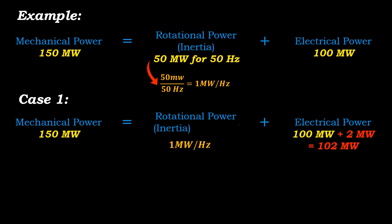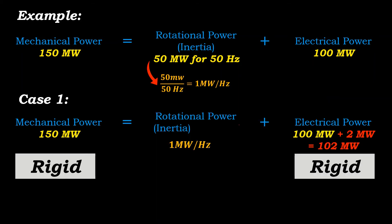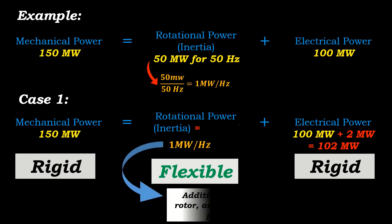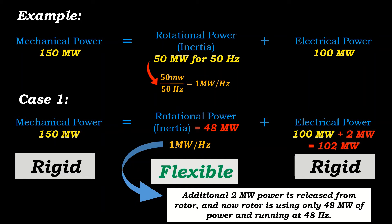It is clear that the load and generation both are rigid. Load is asking for 102 megawatts and input power cannot increase beyond 150 megawatts. This will create a power imbalance. Now only flexible entity is rotor with stored energy of 50 megawatts or inertia, which can be increased or decreased if we are willing to compromise with frequency.